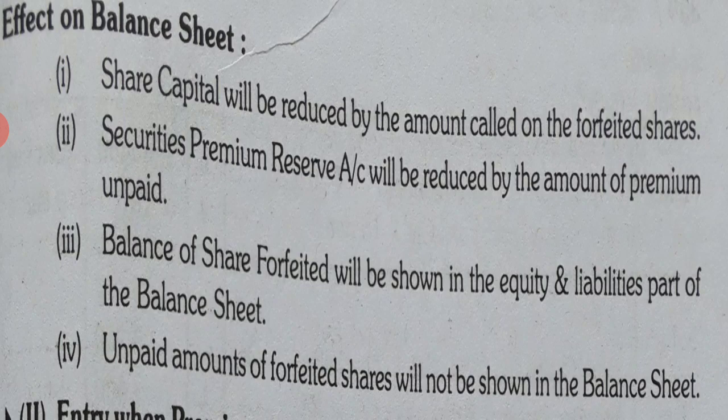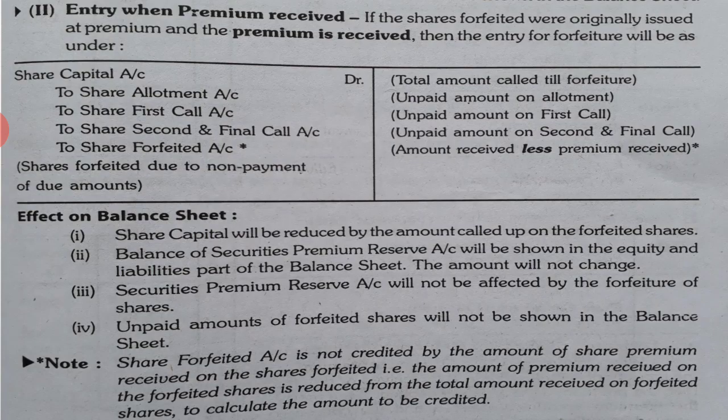Fourth effect: the unpaid amount of forfeited shares will not be shown in the balance sheet because it is not received. Now the next condition is if the premium is already received — then Security Premium Reserve account is not debited. In place of that, the amount written to Share Forfeited account is written as less — received less premium received. Other entries are the same: Share Capital account is debited in all cases, whether it is the simple case, premium is not received, or premium is received.